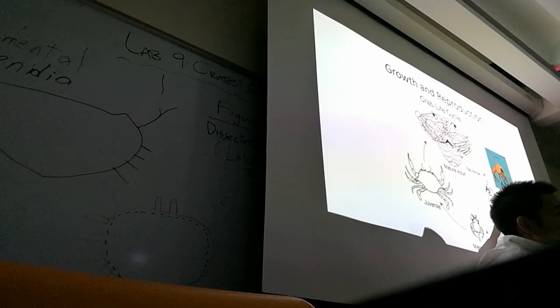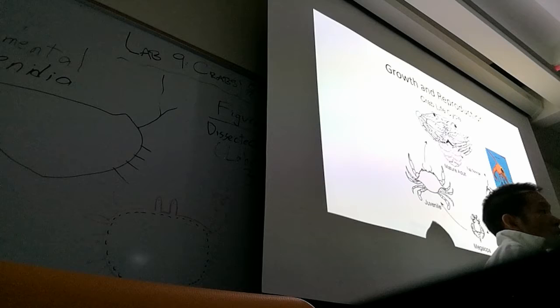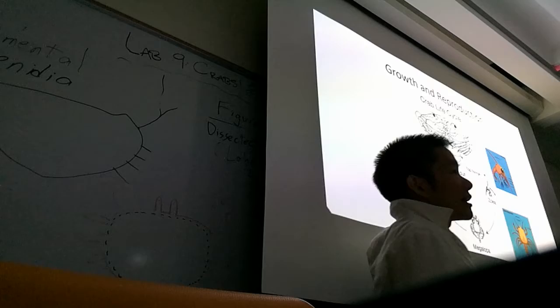After that comes the megalopal stage. The megalops look kind of like miniature lobsters, and that's the final larval stage. After that, they become juvenile crabs, which look pretty similar to the adult crabs, and then they molt some more and become adults.